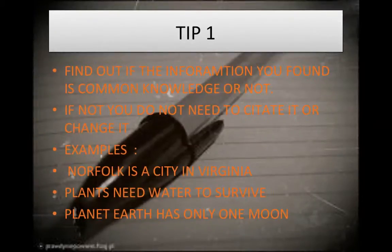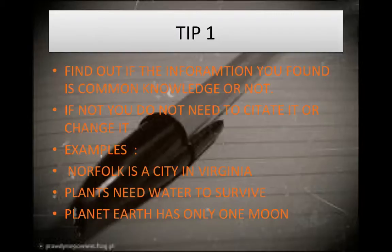Tip number one: find out if the information you found is common knowledge or not. If it's common knowledge, you don't need to cite it or rewrite it. Here are some examples of common knowledge: Norfolk is a city in Virginia; plants need water to survive; planet Earth has only one moon.